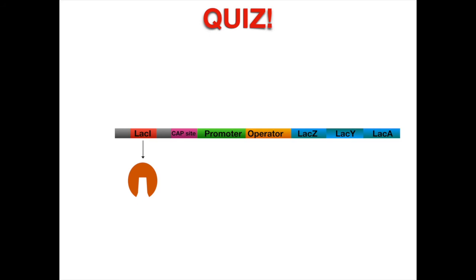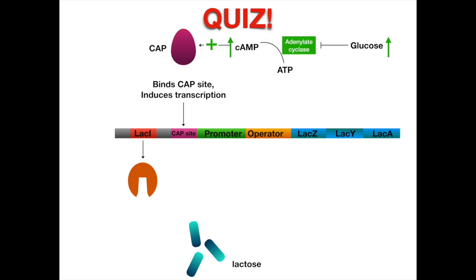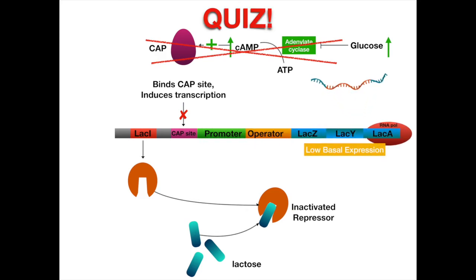Last one. High glucose and high lactose. Lac genes will be expressed, but at very low basal levels. High glucose means that no CAP will bind. However, high lactose will remove the repressor. RNA polymerase will not be activated by CAP, which is why only low levels will be transcribed. That's all for this lesson of Step 1 Review. We'll see you in the next video. Thank you.